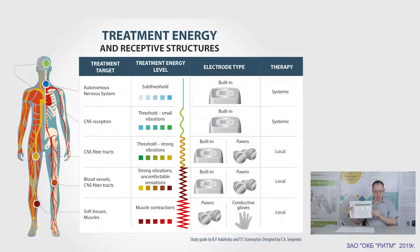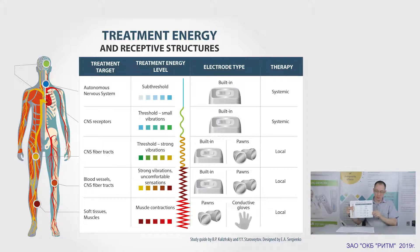The supra-threshold level of energy brings the nerves to a refractory state, and treatment becomes local. The device now focuses on the soft tissues. This level is used for myostimulation and treatment of the locomotor system. The main electrodes to use here are pads and conductive gloves.